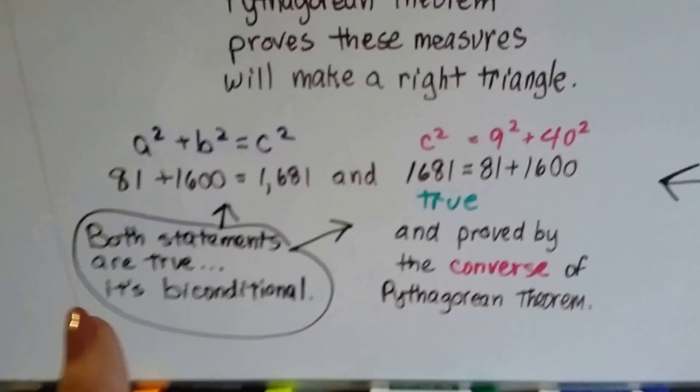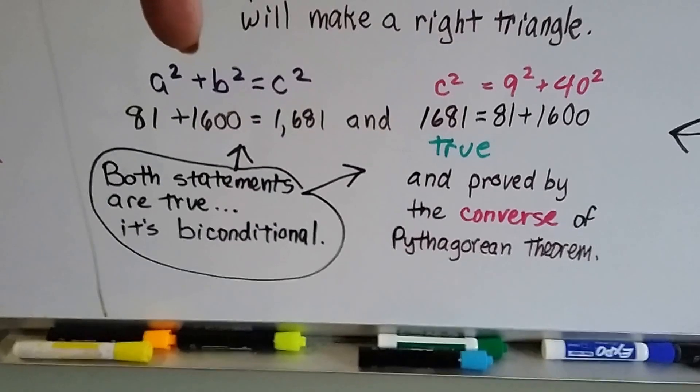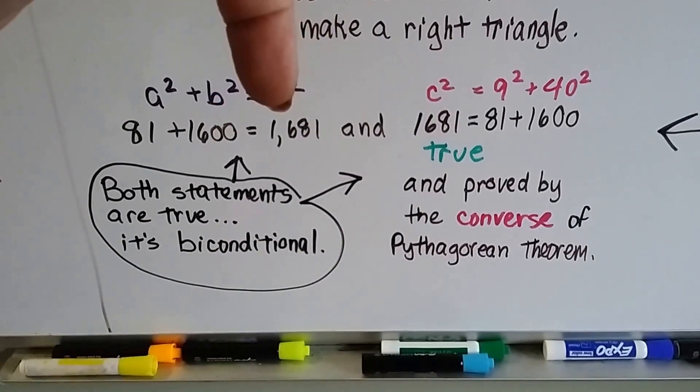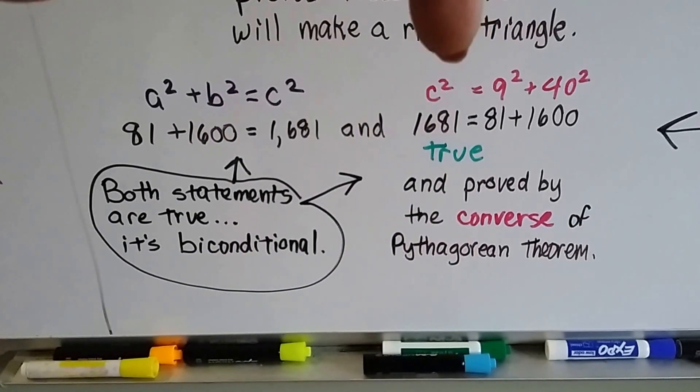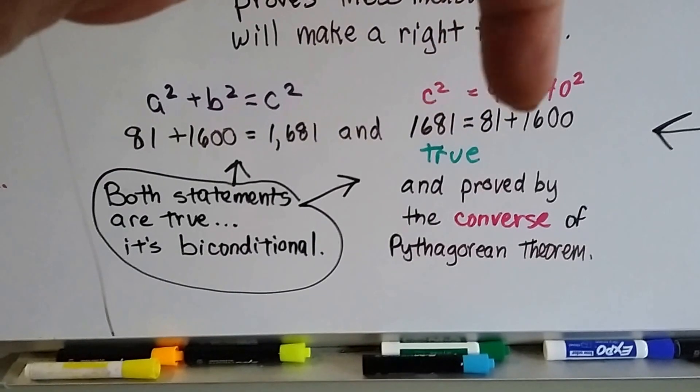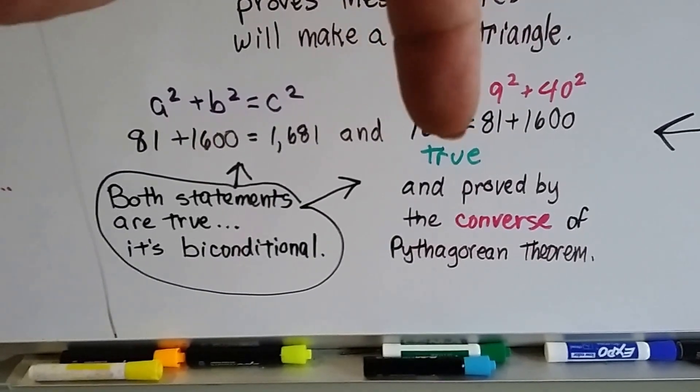So, here's a little more explanation. Here's the Pythagorean theorem. It says 81 plus the 1600 equals 1681. And the converse says this 1681, just like this one, equals 81 plus 1600. So that means it's true.